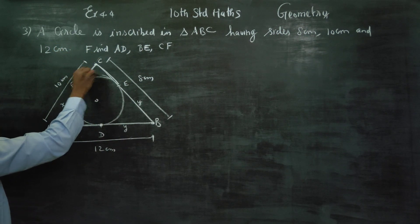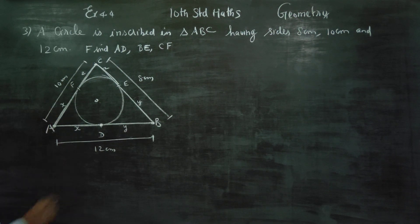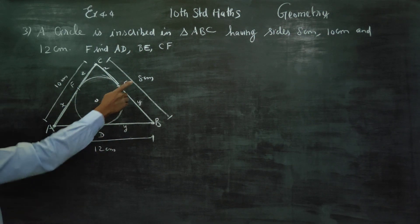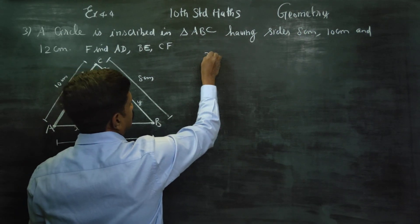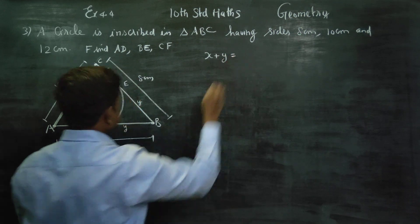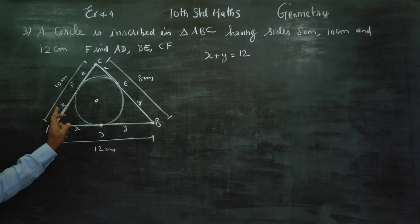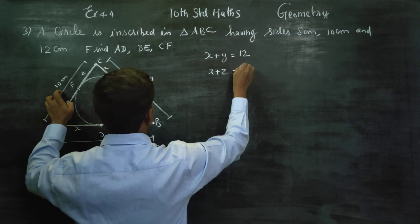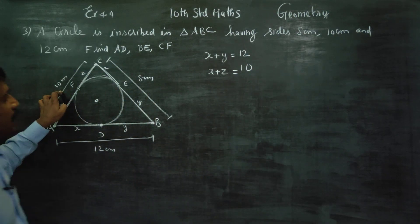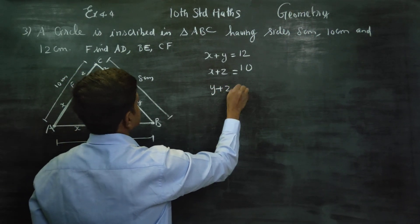Similarly, the tangent lengths from each vertex are equal. From the diagram, with sides 12, 10, and 8: x plus y is equal to 12, x plus z is equal to 10, and y plus z is equal to 8.